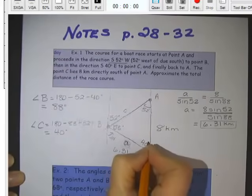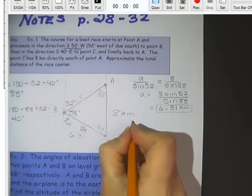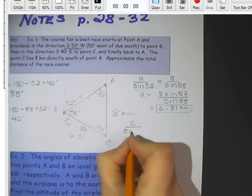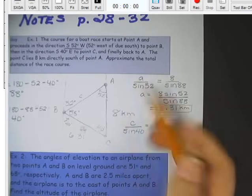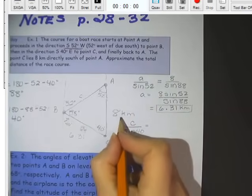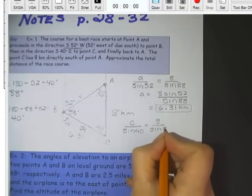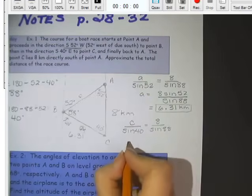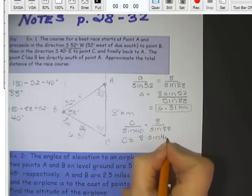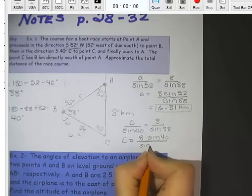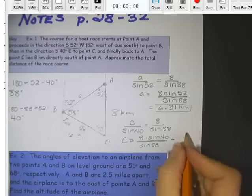And that's nice. Okay, so to find little C. I always start with what I'm looking for on top. little C over the sine of C, the sine of 40, equals, and I could use A or B. It would be better to use B, because it was the size that was given to me, 8 over the sine of 88. So C is going to equal 8 times the sine of 40, over the sine of 80, over the sine of 88. Punch that in my calculator, and I get 5.15 kilometers rounded.